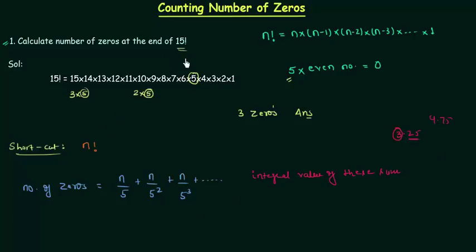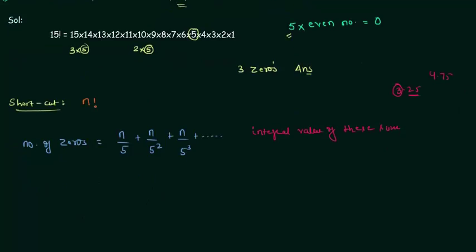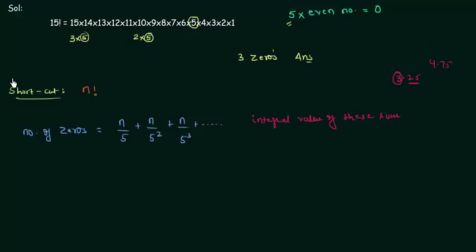Now we will try to find out 15 factorial by using this shortcut. n is equal to 15. So number of zeros is equal to 15 by 5 plus 15 by 25. 5 square is 25 plus 15 by 625. 5 cube is 625. And from here I will have 3.